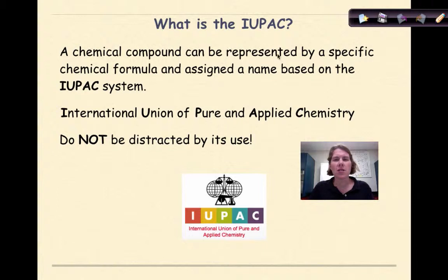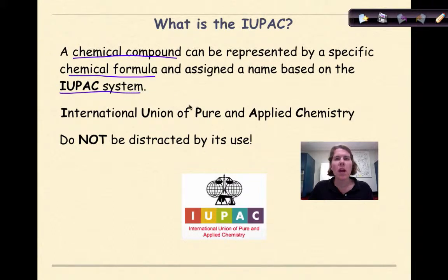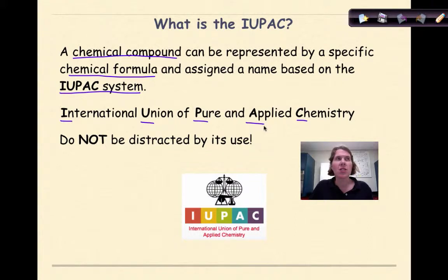Now let's discuss the abbreviation IUPAC. According to the New York State Core Curriculum for Chemistry, a chemical compound can be represented by a specific chemical formula and assigned a name based on the IUPAC naming system. IUPAC means the International Union of Pure and Applied Chemistry. It's just the standard method of naming chemical compounds that New York State uses so everything is systematic across the exam. Don't be distracted if you see IUPAC in a question.